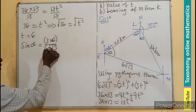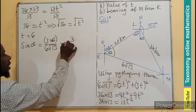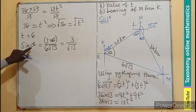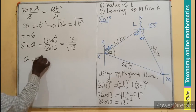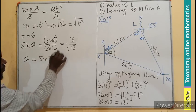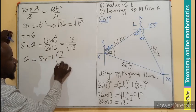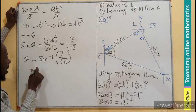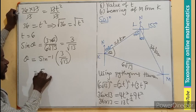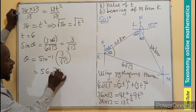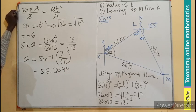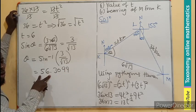This will cancel. So we're left with 3 over root 13. But I'm looking for theta. So theta equals to the sine inverse of 3 divided by root 13. And on our calculator, this will give us 56.3099 as decimal point. But don't forget,